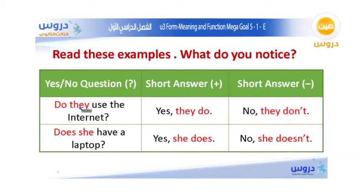We use either do or does to ask questions in the simple present tense. Do comes with subject pronouns like they, we, I, and you.